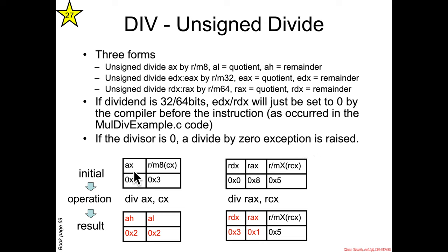So quick, simple examples in that 16-bit version. AX, let's say AX had the value 8, divided by an RM8, which happens to be CX, then 8 divided by 3 is 2, remainder 2. Or the longer version, 8 divided by 5 is 1, remainder 3.